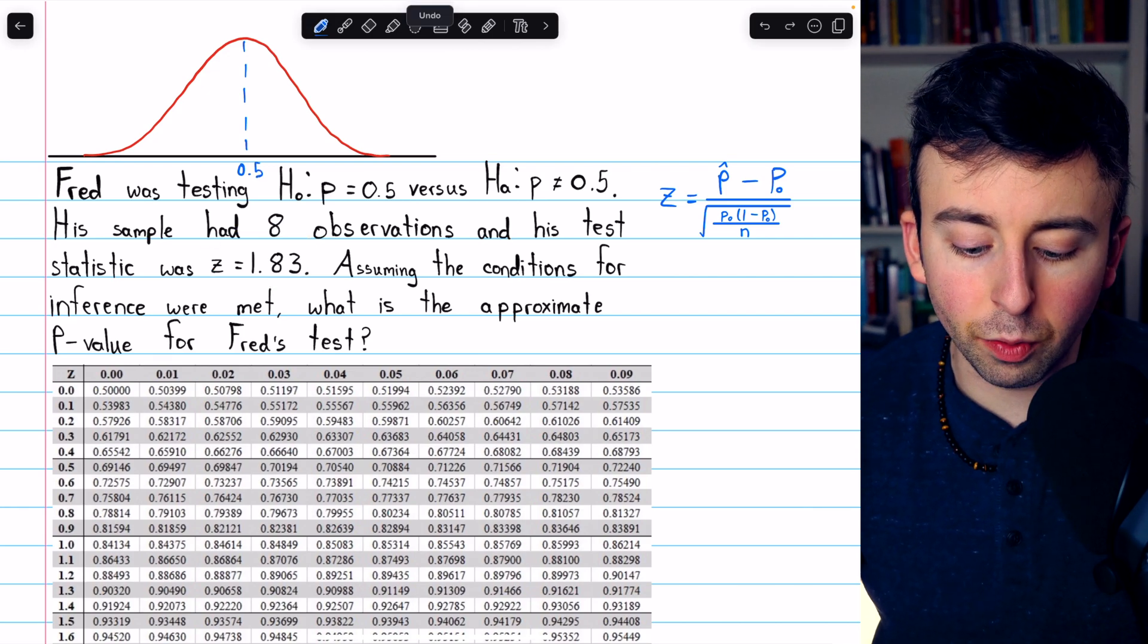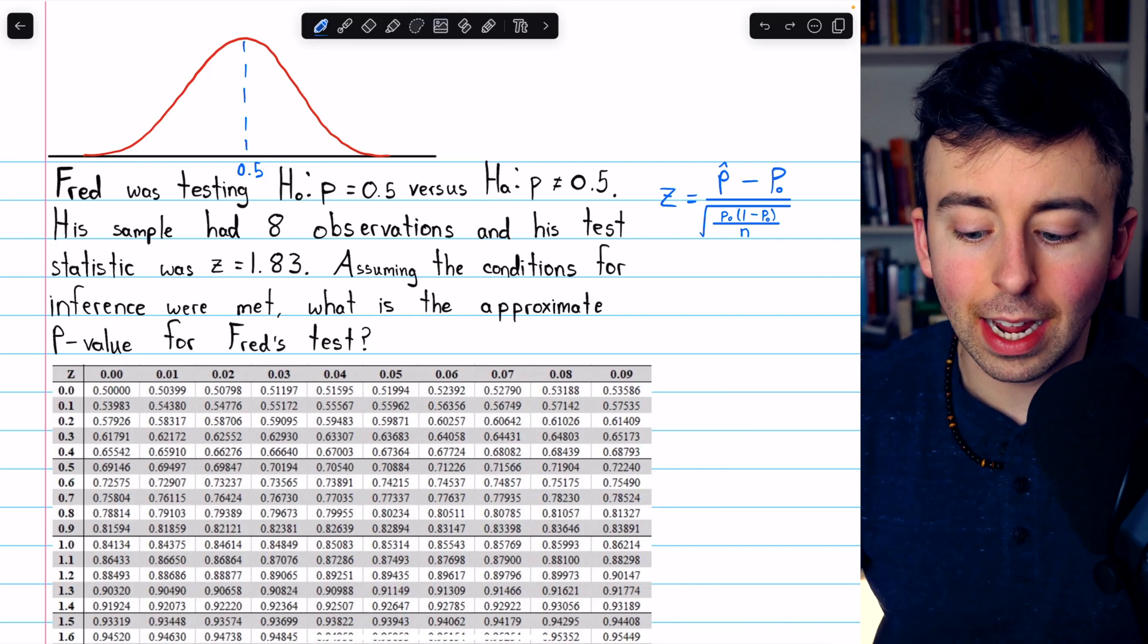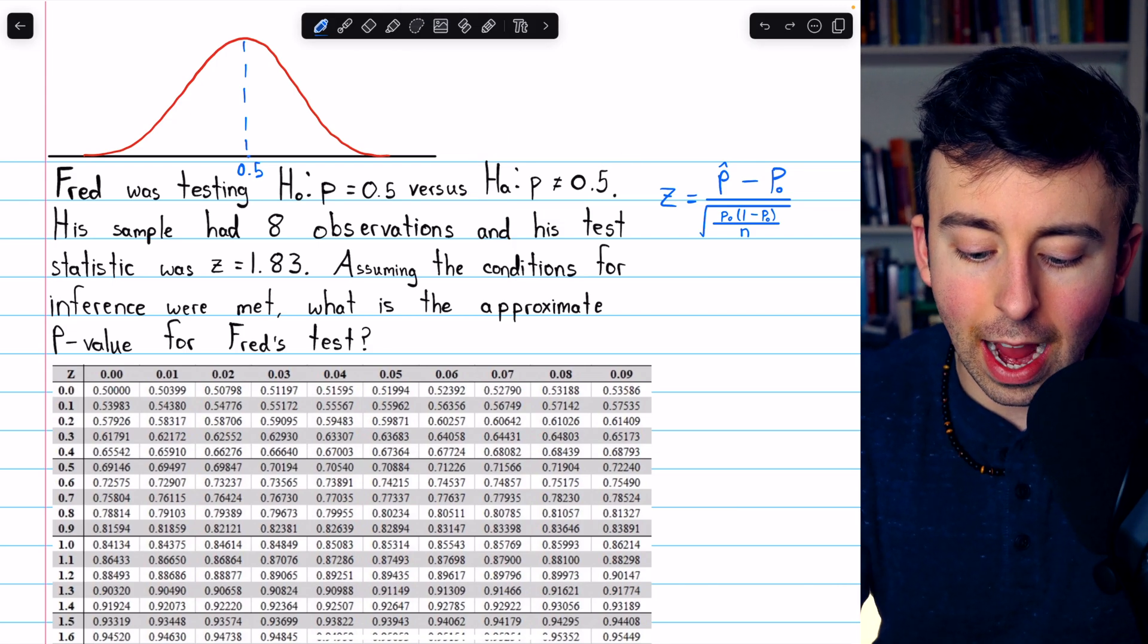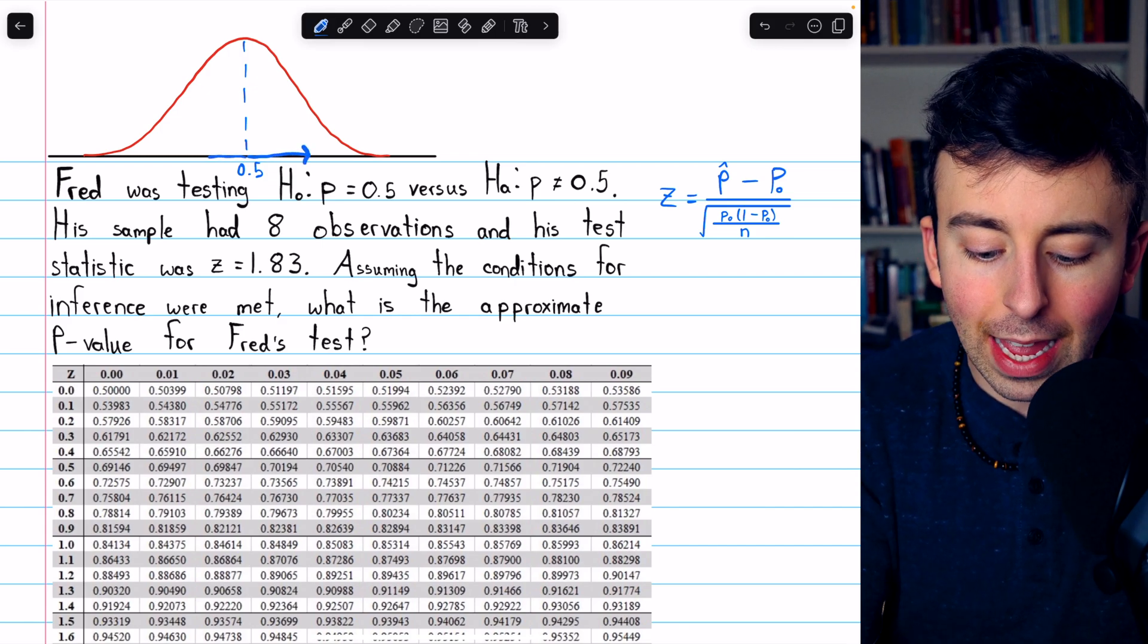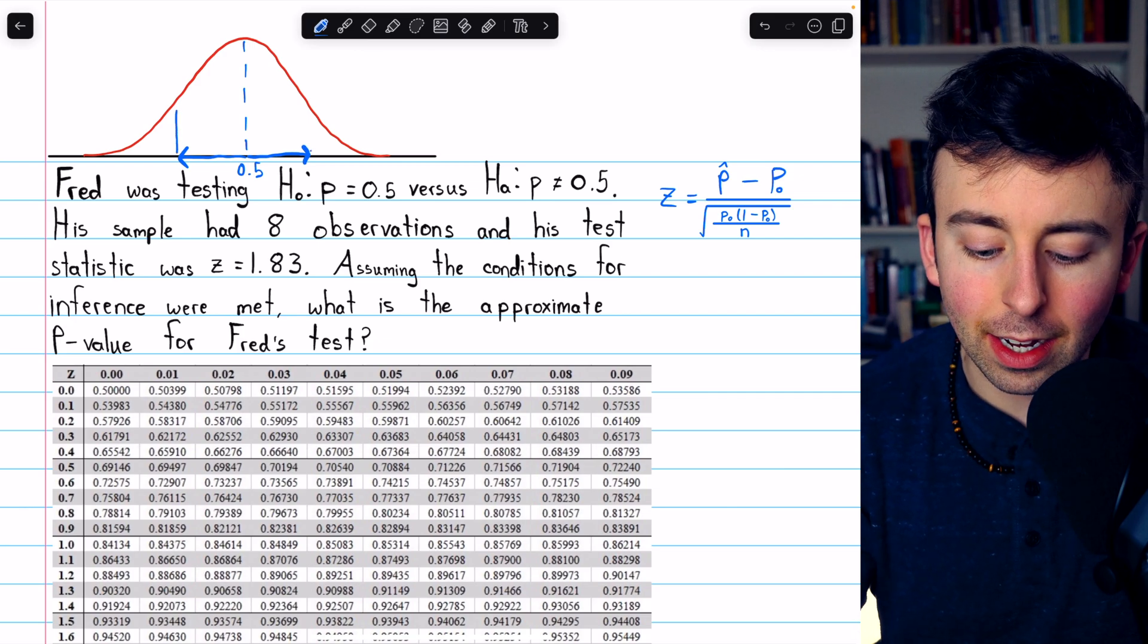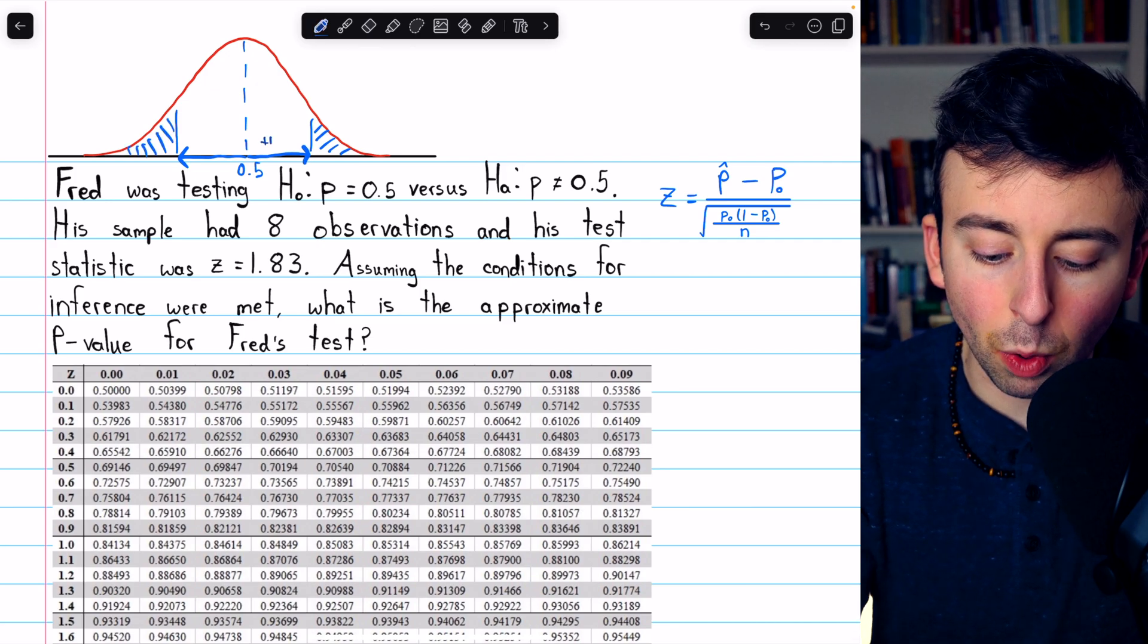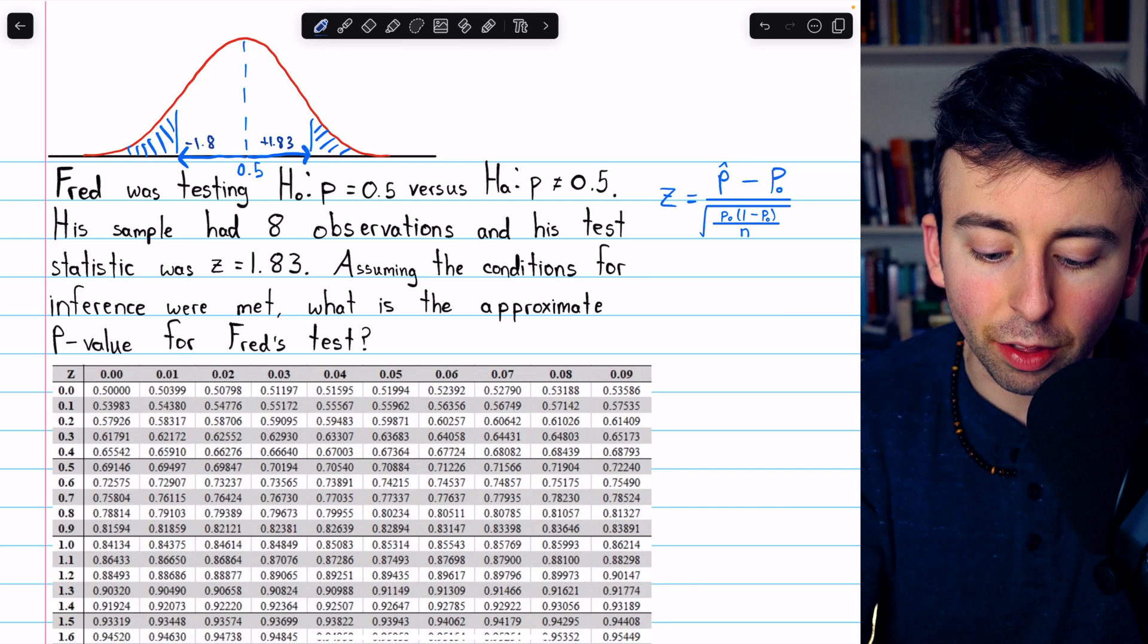Now, we had a test statistic of 1.83, and remember, our alternative hypothesis we're testing is that p is different from 0.5, so we want to consider the area on the normal curve that is at least 1.83 standard deviations away from the mean, both in the positive direction and in the negative direction. Again, this is plus 1.83 standard deviations, and this is minus 1.83.